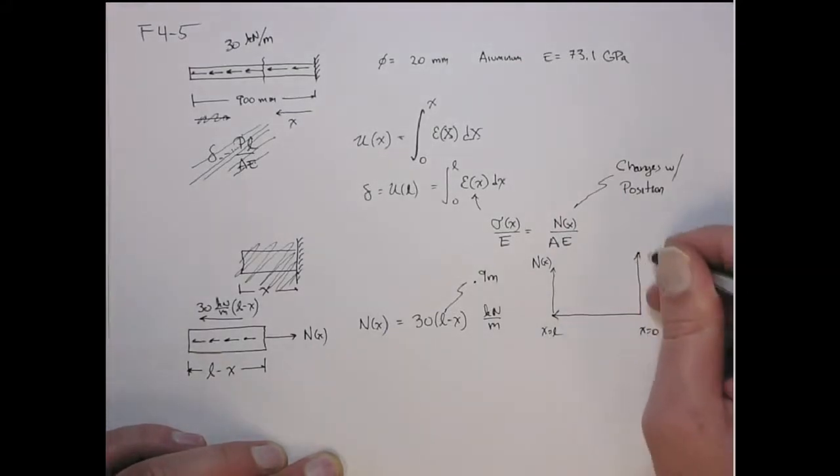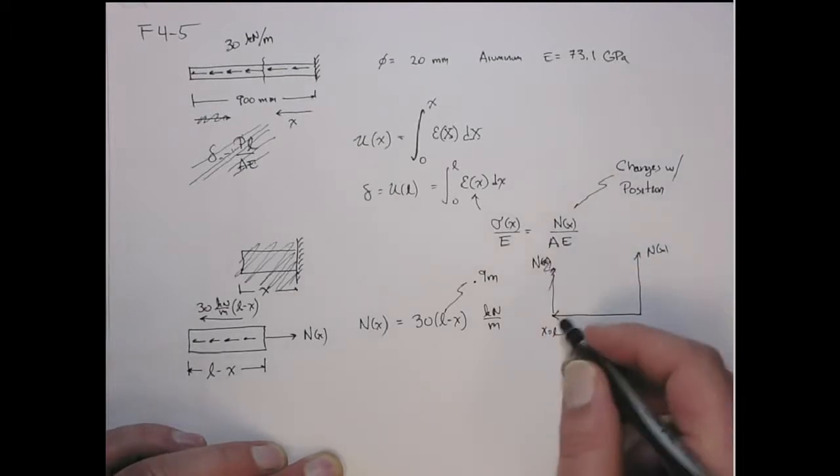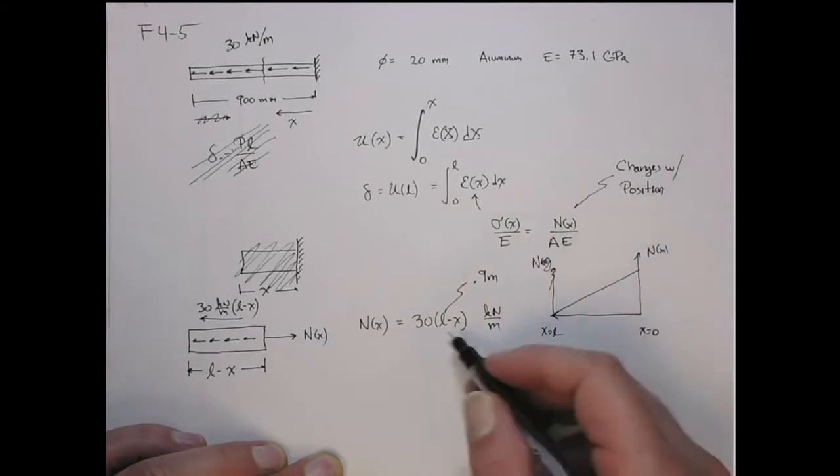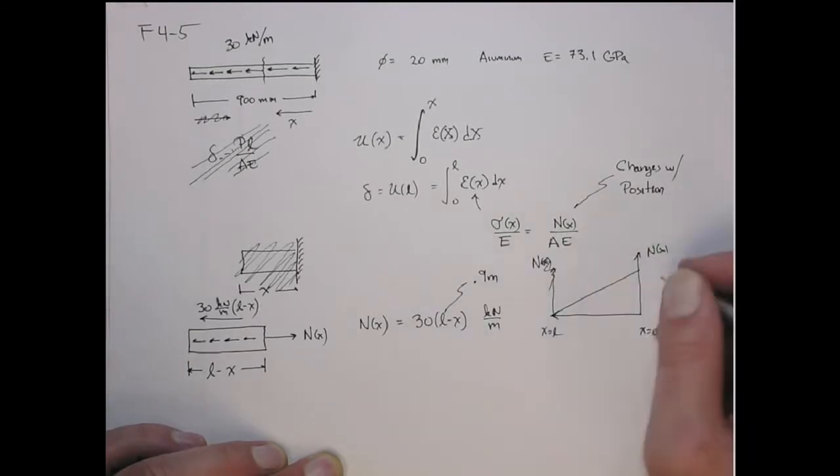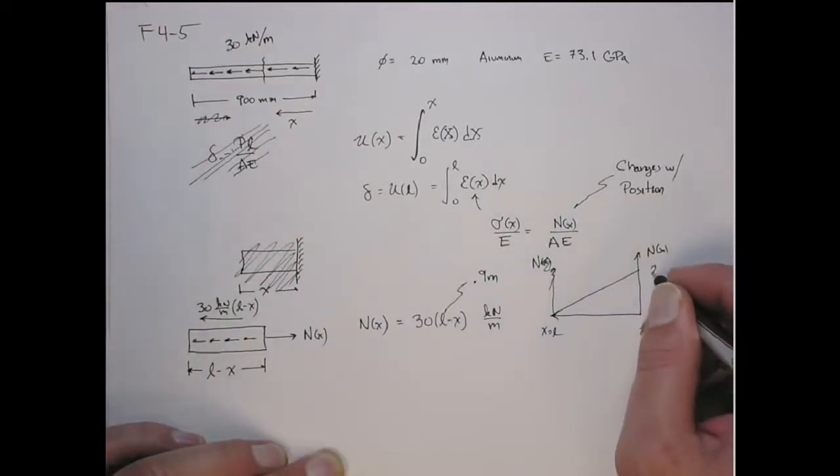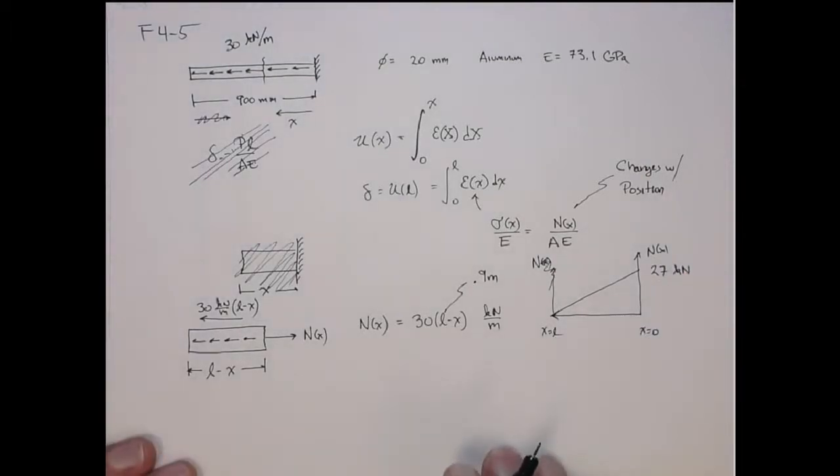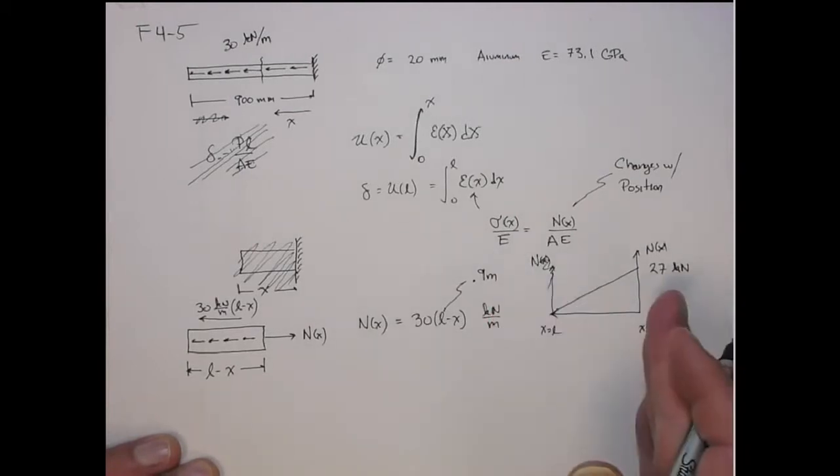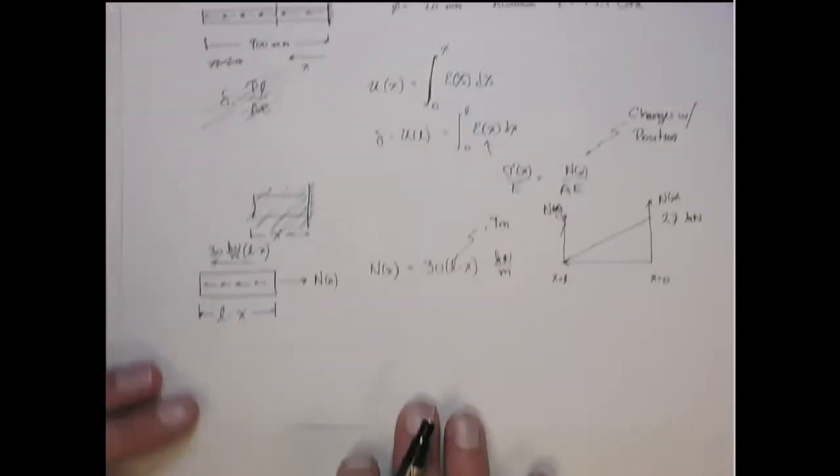Then at this point it's zero, and it varies linearly with x until you get to the point here where it's maximal. This is 30 times L because x equals zero, so that is 27 kilonewtons. And then it goes to zero at x equals L. That's the distribution of the internal reaction force - it's zero at the tip and increases when you get to the root, maximal at the root.